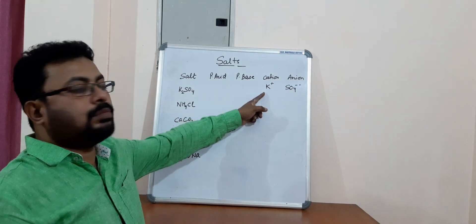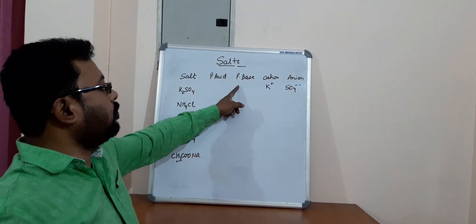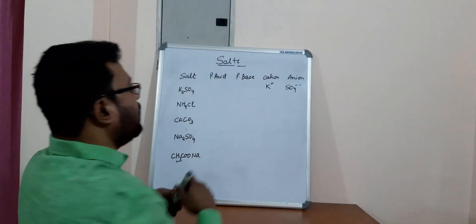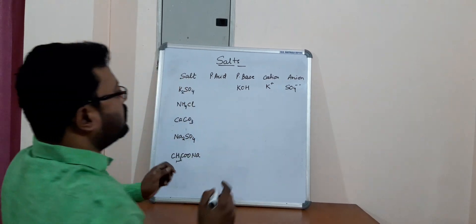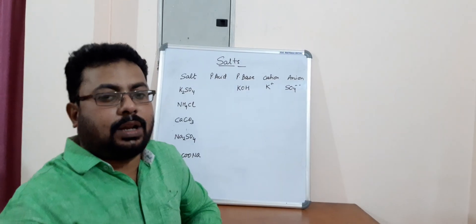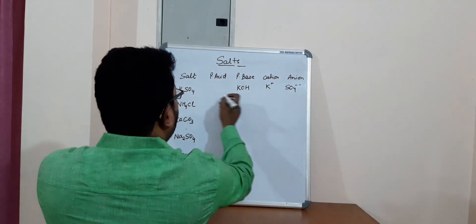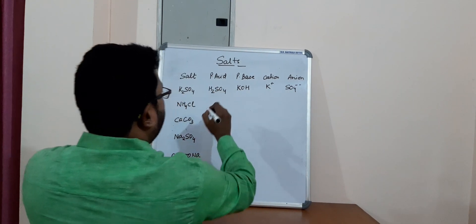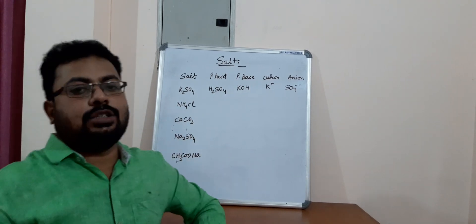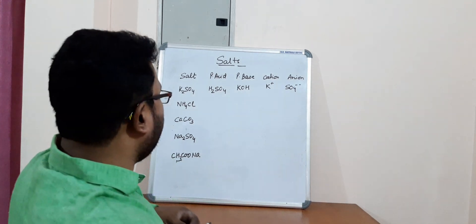So cation comes from what? It comes from the base. So what would be the base then? It would be potassium. So what base do we have? We just have to add OH. So we have KOH, potassium hydroxide. And similarly, when you are talking about the sulfate anion, it basically comes from sulfuric acid. So H2SO4, we have to add hydrogen before it. So this way we can find out.